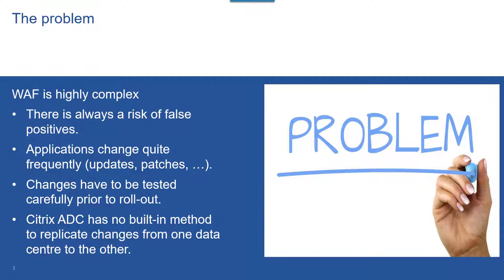Recently I had to do a web application firewall project. The web application firewall is a highly complex thing and there is always a risk of false positives, so you have to test applications quite well. On the other hand, applications change quite frequently — there are updates and patches. To keep the number of false positives reasonable, we have to test all changes carefully prior to the final rollout. Unfortunately, there is nothing like a built-in method to replicate changes from test side to production side, so I had to invent this method.